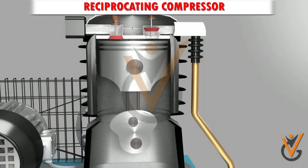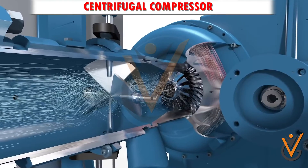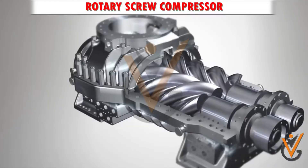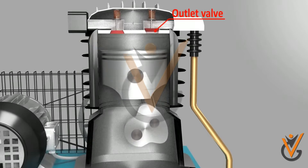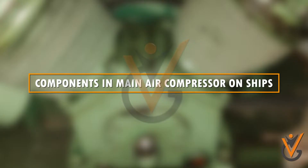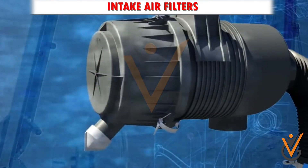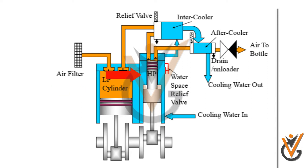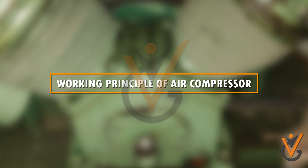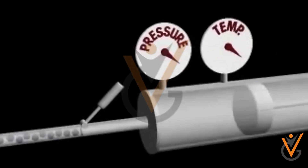Types of compressors: reciprocating compressor, centrifugal compressor, rotary screw compressor, and rotary vane compressor. Out of these, the reciprocating air compressor is commonly used on ships. Components in the main air compressor on ships include intake air filters, interstage coolers, after coolers, unloader, moisture drain traps, receivers, low pressure side or first stage, high pressure side or second stage, and relief valve.